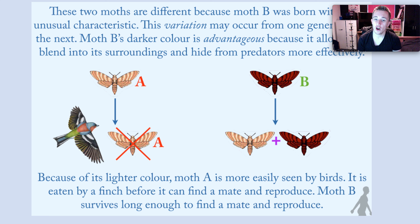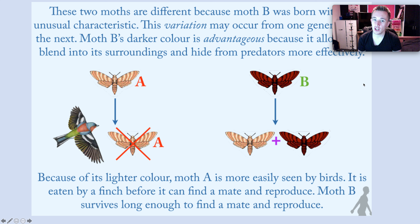So these two moths are different because moth B was born with an unusual characteristic. If you look at the colour, you can see straight away they are different. Moth B has a darker colour and that's advantageous — that means it's good — because it allows them to blend into their surroundings and hide from predators. So moth A gets eaten because it can't hide. So moth A dies.